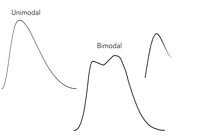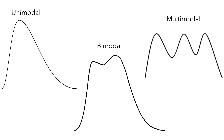And a distribution with more than two modes is usually just called multimodal. Now let's look at one more aspect of the shape of a distribution.